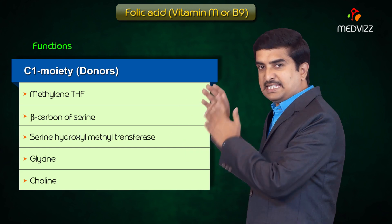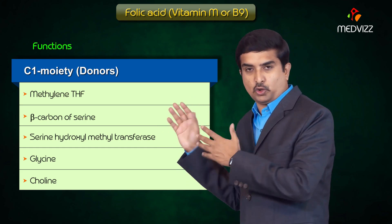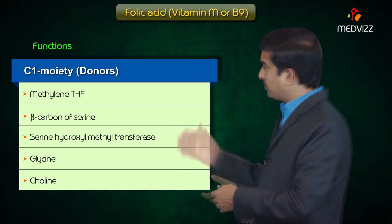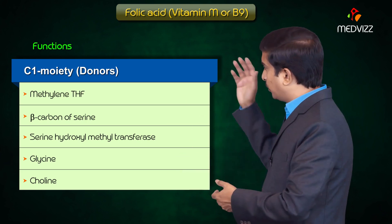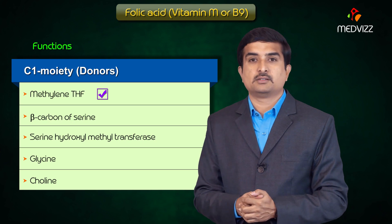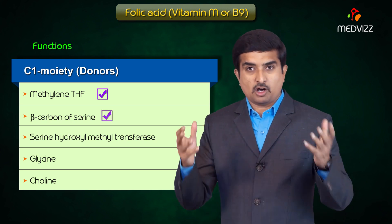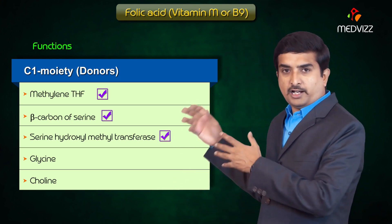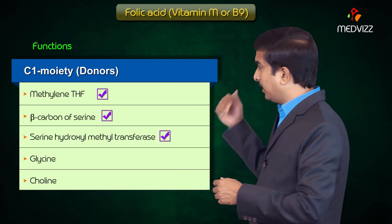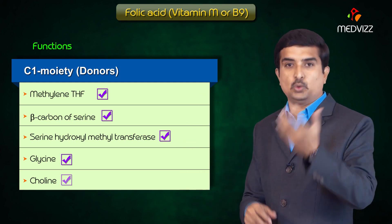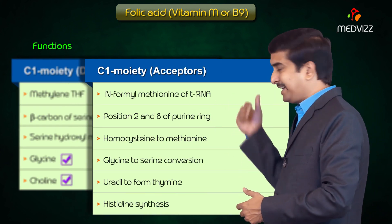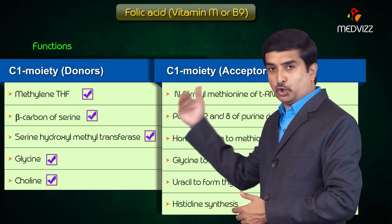The one-carbon (C1) moiety donors in metabolism include methylene tetrahydrofolate, the beta-carbon of serine via serine hydroxymethyl transferase, which is the enzyme involved in the pathway of glycine as well as choline.